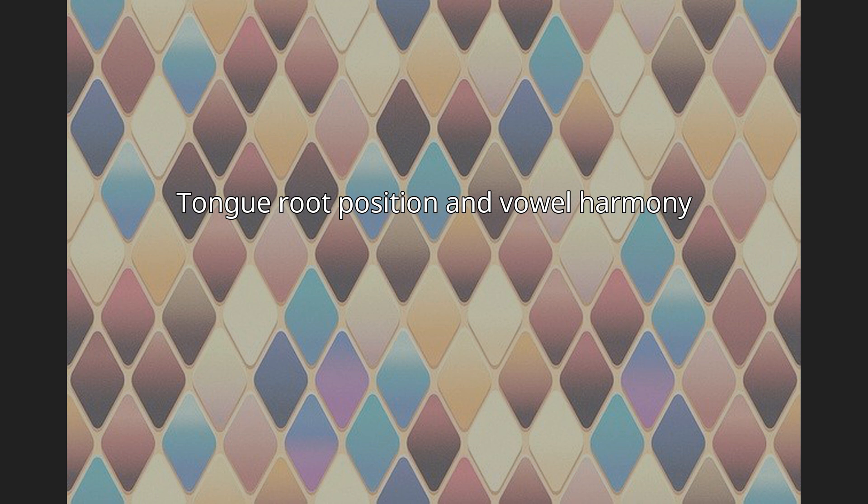As mentioned above, many African languages such as Masai have systems of vowel harmony based on tongue root position. This is illustrated with the dialect of Akan, which has 15 vowels: 5 plus ATR vowels, 5 minus ATR vowels, and 5 nasal vowels. There are two harmonization rules that govern the vowels that may co-occur in a word.